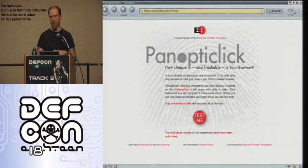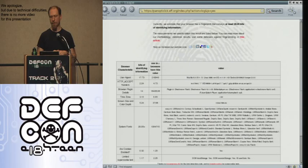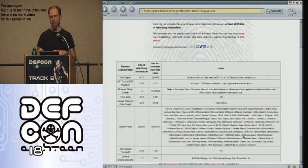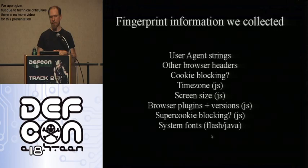We put up a website, panopticlick.eff.org. If you went there, you'd see a page explaining what's going on with a button to click if you want to participate. After clicking, you'd get a page saying your browser appears to be unique — at least up to 20 bits of identifying information coming from your fingerprint — along with a table showing all the component measurements and how identifying each one was individually: user agent string, accept headers, plugin details, fonts, and so on.